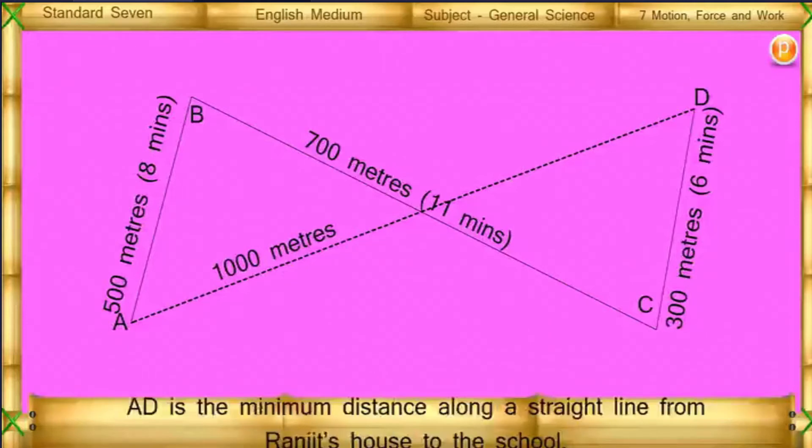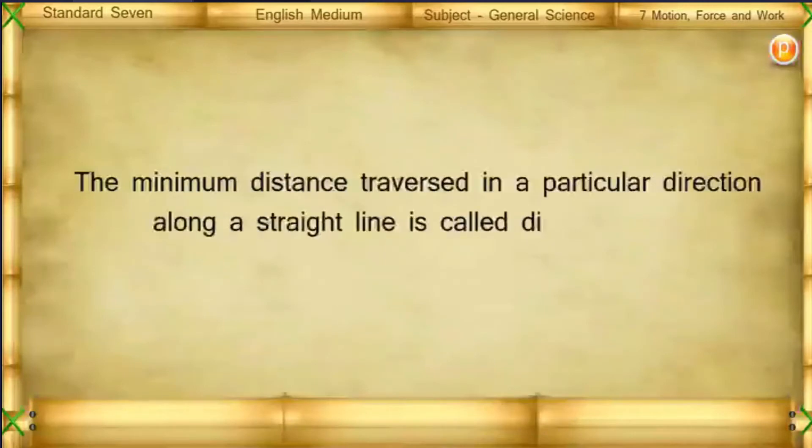AD is the minimum distance along the straight line from Ranjit's house to the school. The minimum distance traversed in a particular direction along the straight line is called displacement.